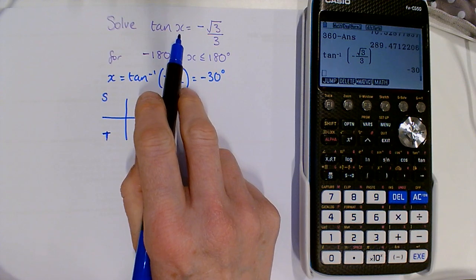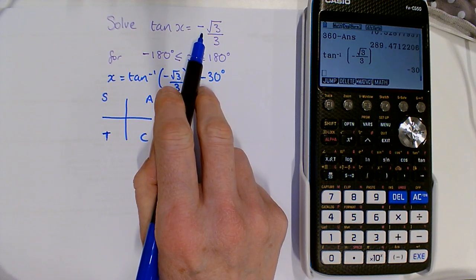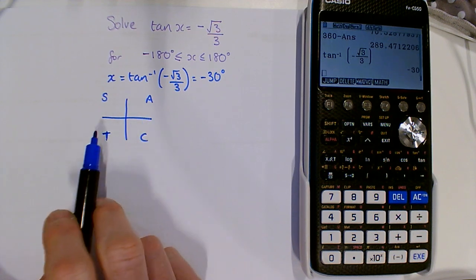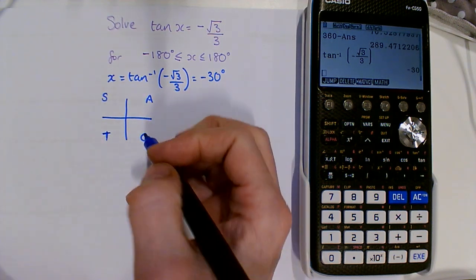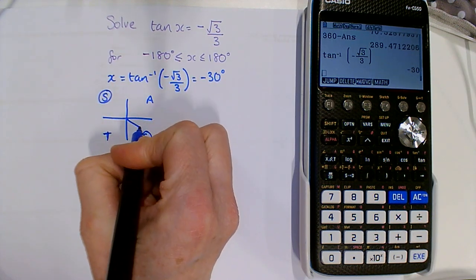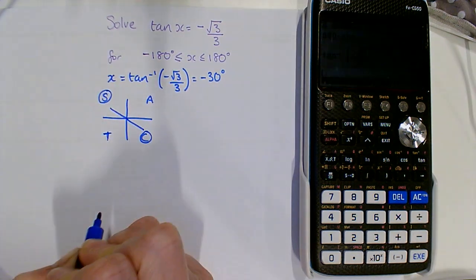So our equation had tan x being negative, and if I look here, tan is positive in All and positive where the T is, so tan will be negative here and here. So I'm going to draw sticks in both of those places.